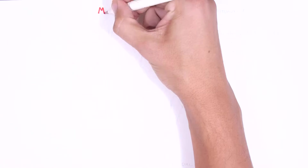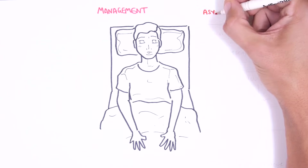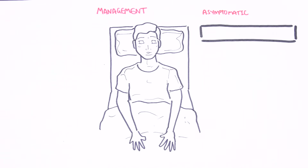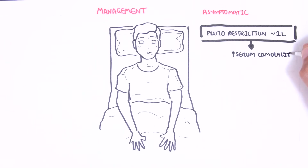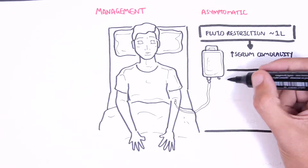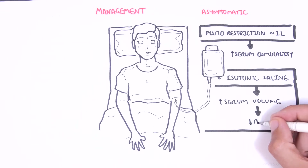Management of hyponatremia depends on the causes as well as the symptomatology. Mild asymptomatic hyponatremia is of little clinical significance and requires no treatment. For hyponatremia that is low but the person is still asymptomatic, or for ongoing hyponatremia, treatment should be initiated. This includes strict fluid restriction between 750 mL to 1.2 liters and administration of slow isotonic saline, which will increase serum volume and hopefully suppress the release of ADH.